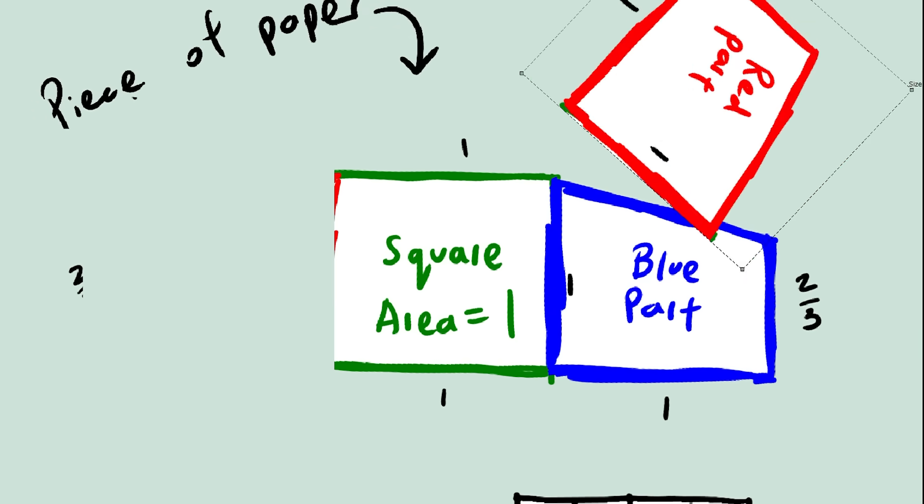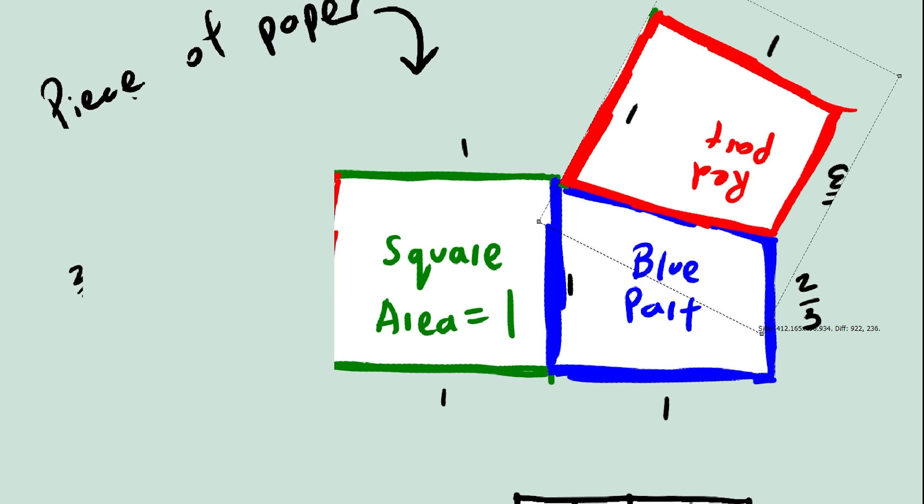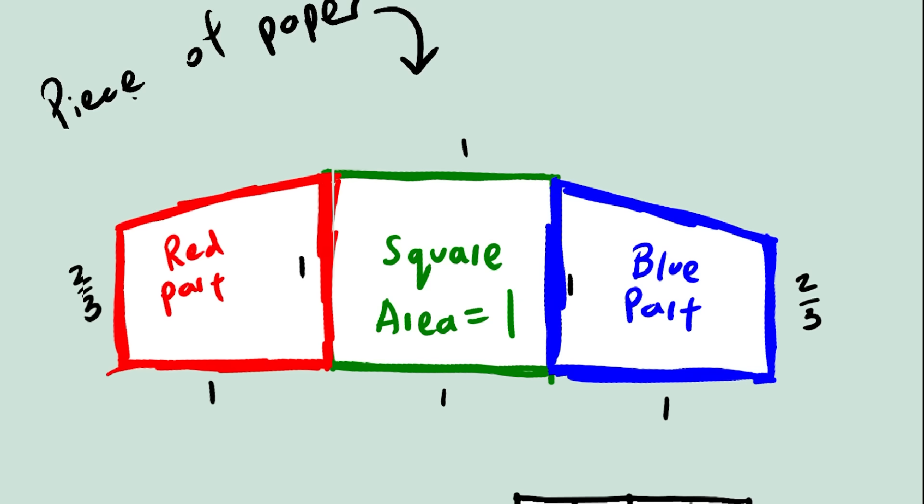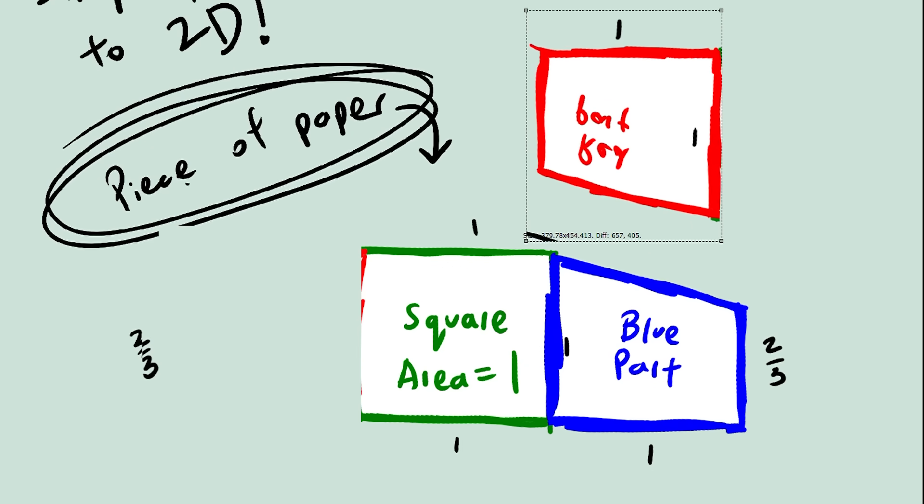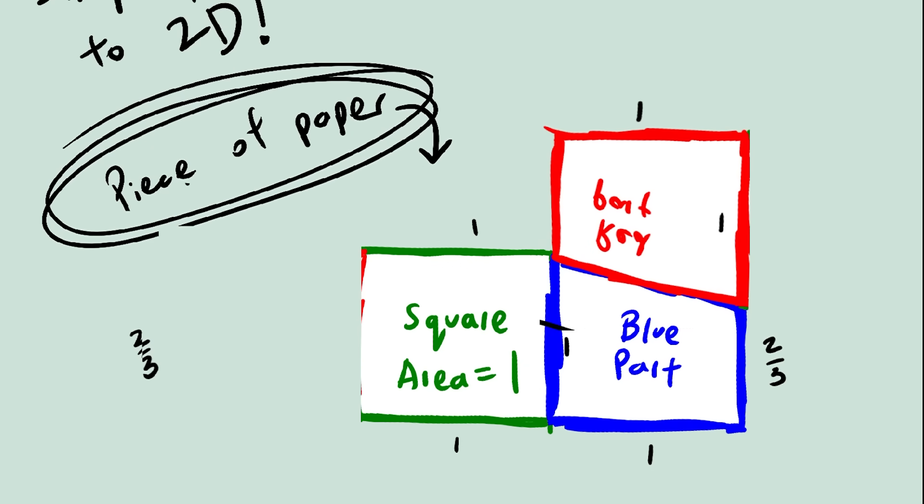No, we can't. They don't fit together when rotated in two dimensions. But the answer is obvious to you. These are just two pieces of paper. We can pick one up, rotate it in 3D, and put it back down, and now we have a rectangle.